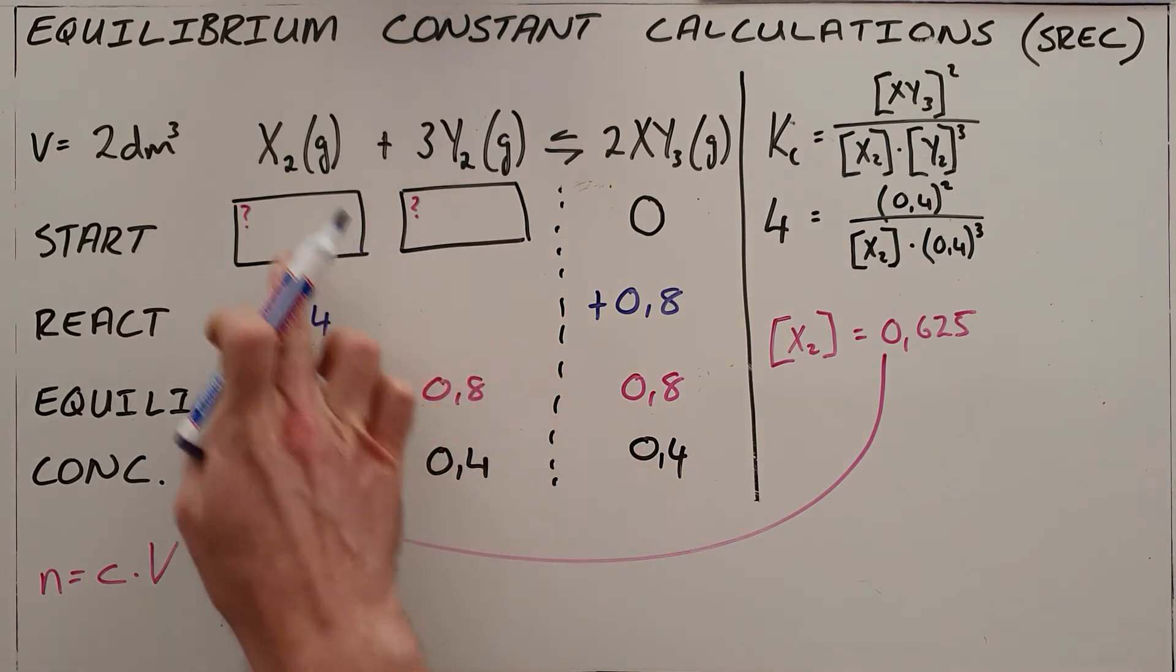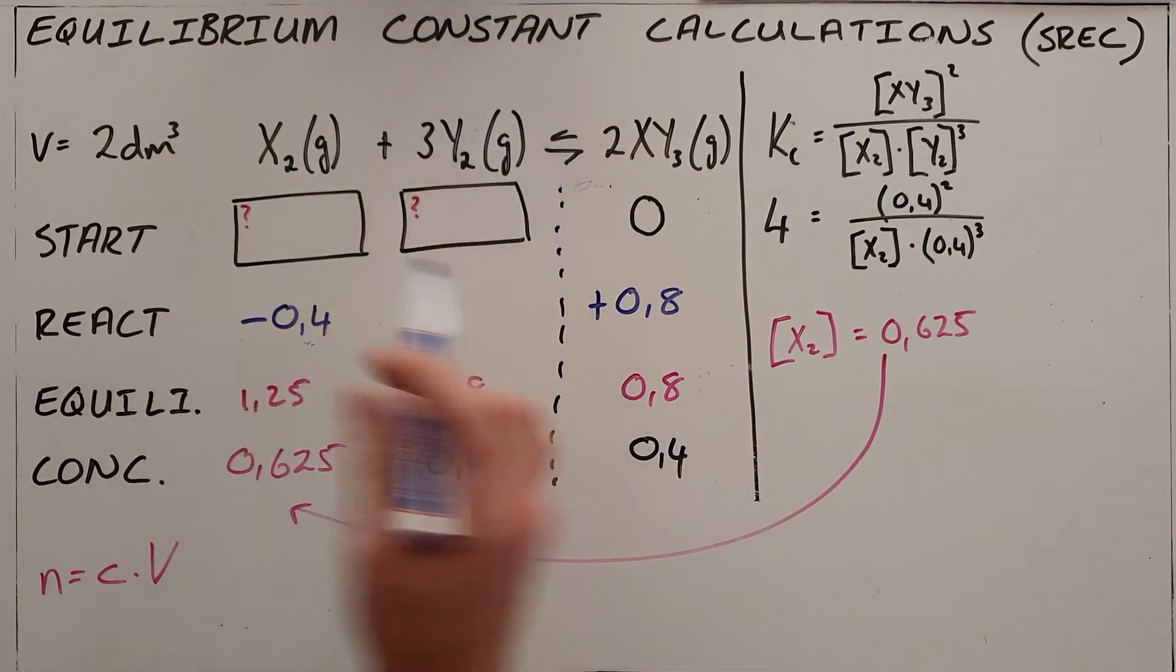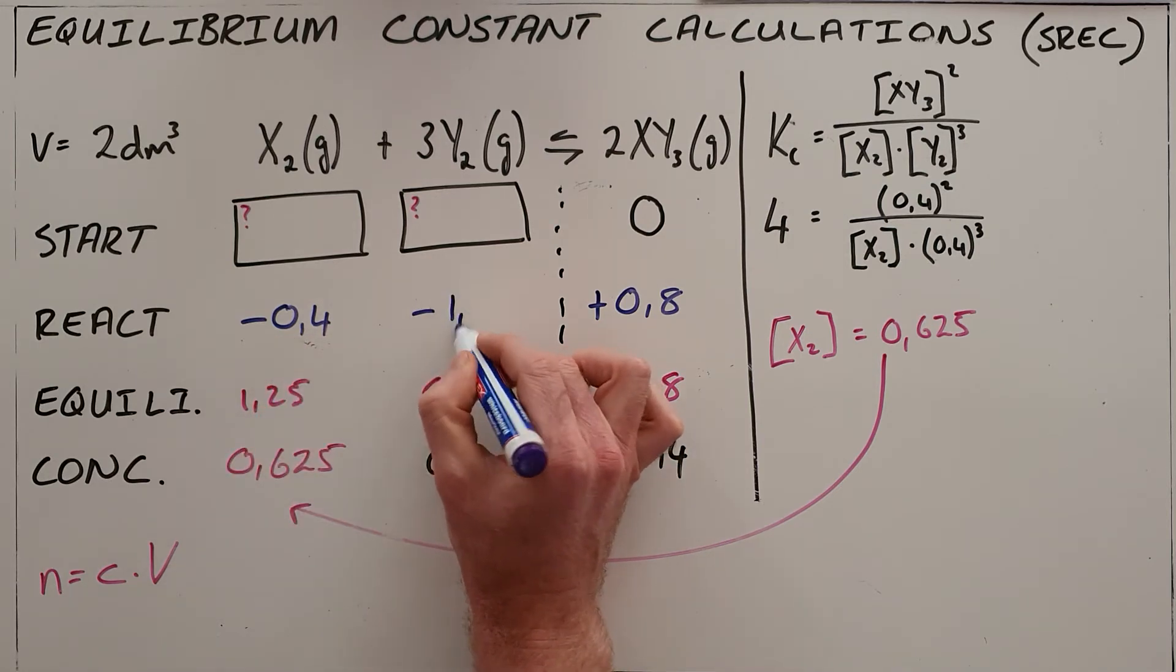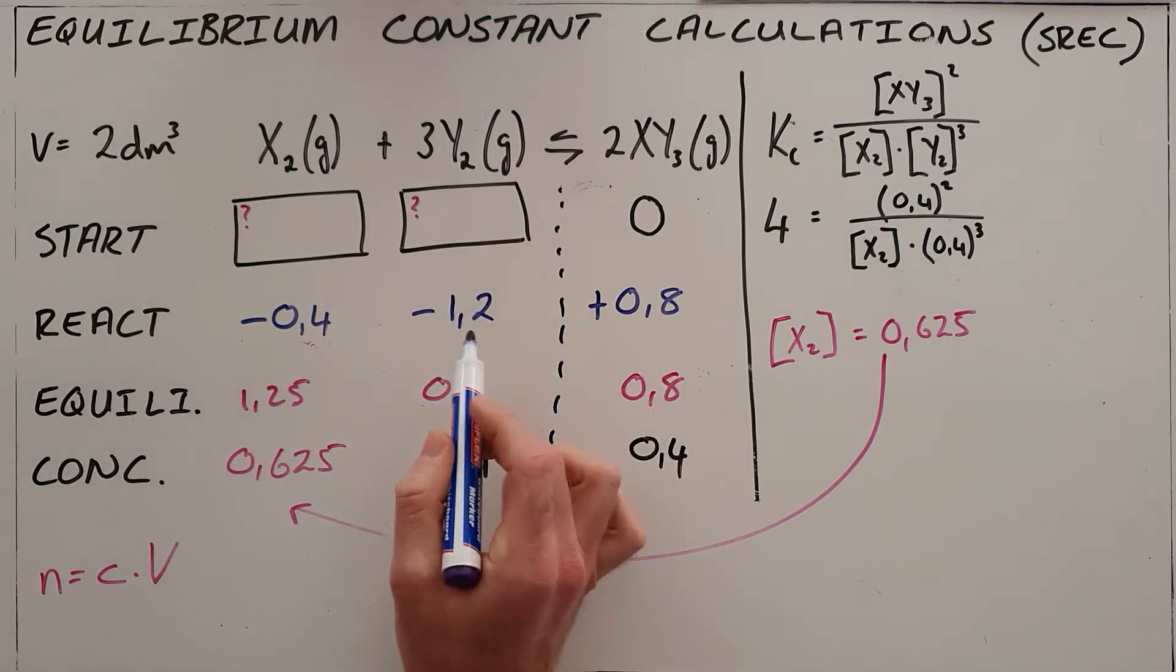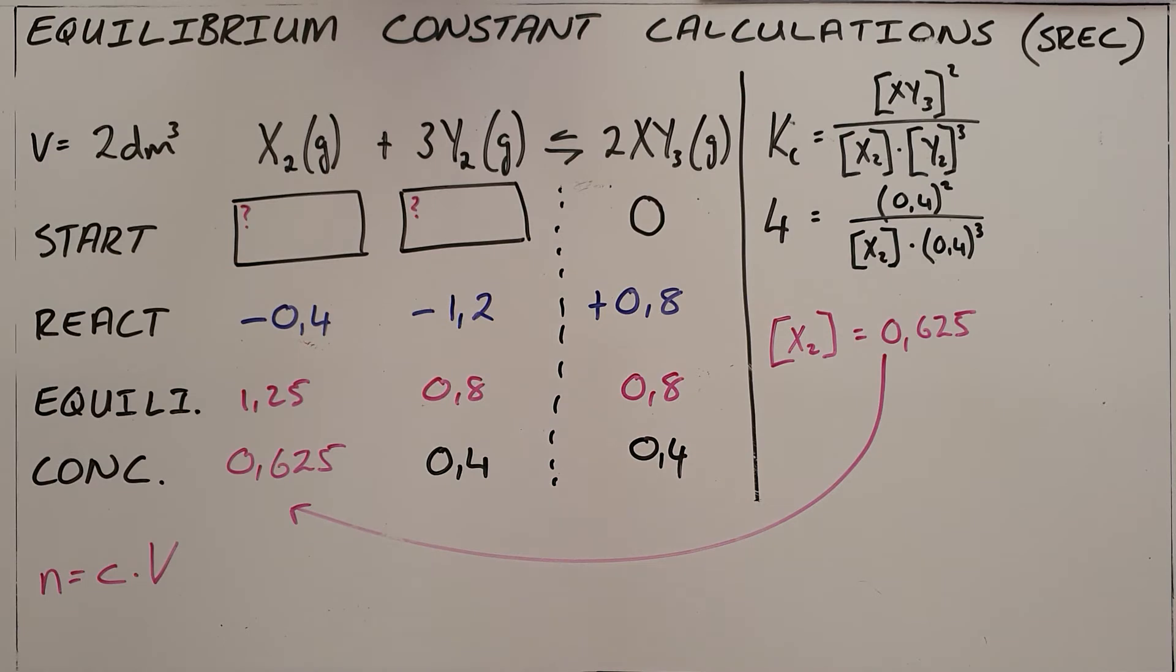We can also see that x2 reacts to y2 in a ratio of 1 to 3, so 3 times 0.4, 1.2 moles of y2 must have reacted.